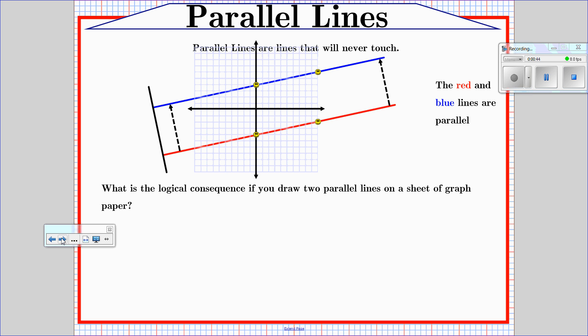So I did it. Here's some parallel lines on a sheet of graph paper. What's the logical consequence? Look at our smiling friends up there.